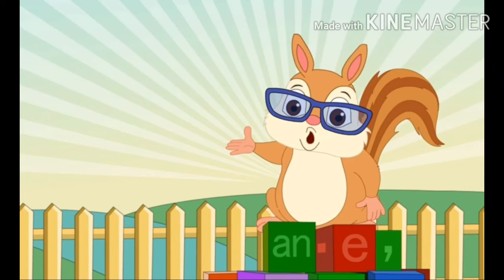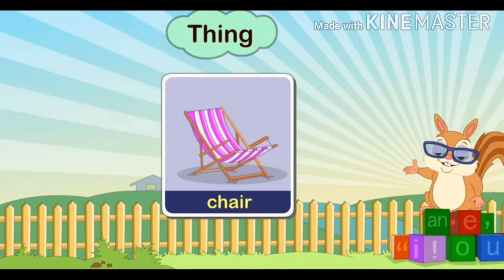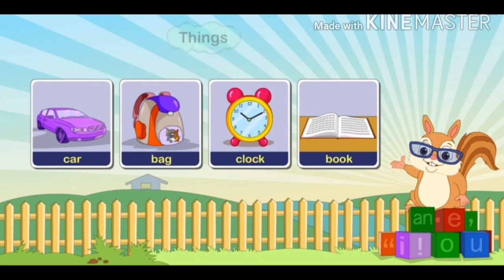Now, what are you sitting on? Are you sitting on a chair? Chair is a naming word for a thing. So, a noun can be a name given to a thing. What other things do you see around? Car, bag, clock, book, etc. are the names of things, and thus, nouns. These are the naming words which we call nouns.